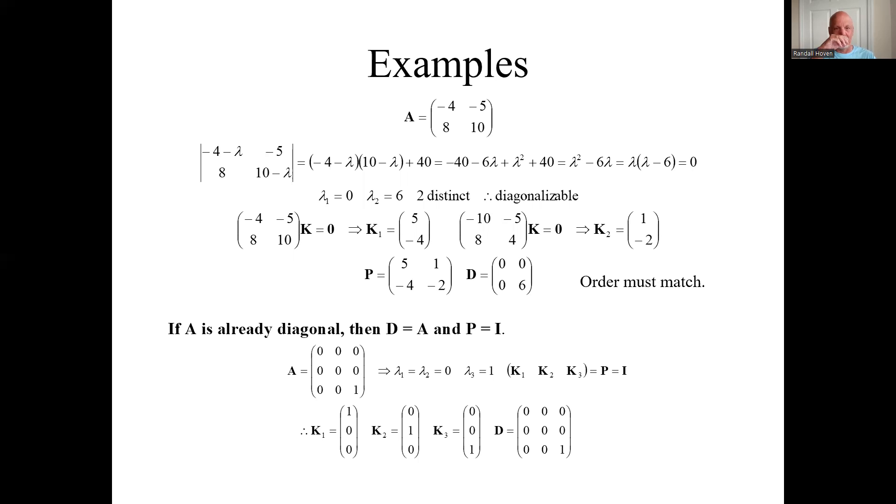Let's do an example, a couple of examples. Actually, maybe just one example. Say here's our A. So we find the eigenvalues the way we do. It leads to a quadratic. It's basically defactored. We don't have to use the quadratic formula.